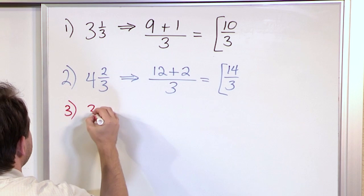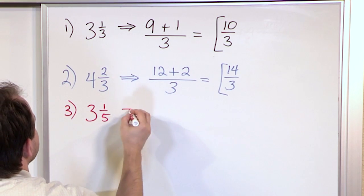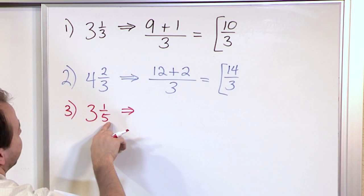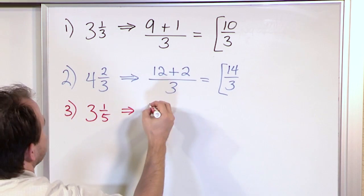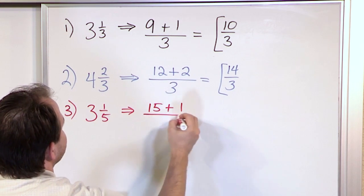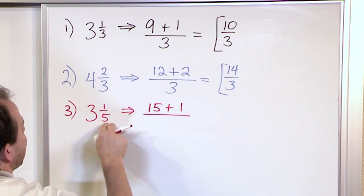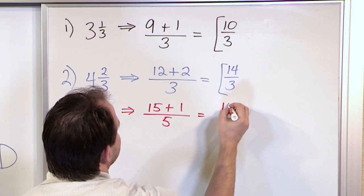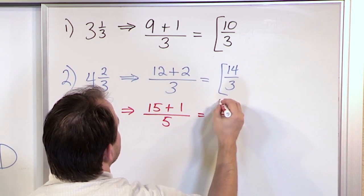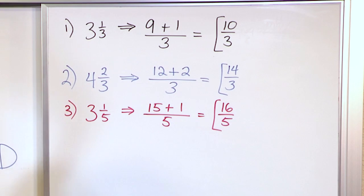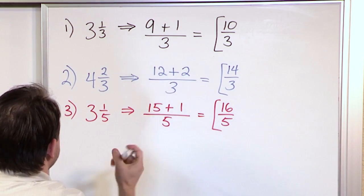Let's say we have three and one fifth and I want to convert that to an improper fraction. I take the five and multiply by the three, giving me 15, and add the one on top. I keep the five on the bottom. So I have 16 on top, five on the bottom — 16 fifths. That's the final answer, exactly equivalent to three and one fifth.